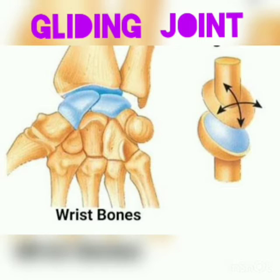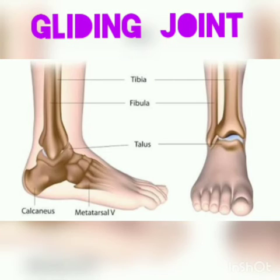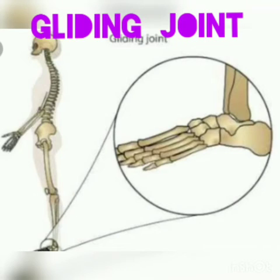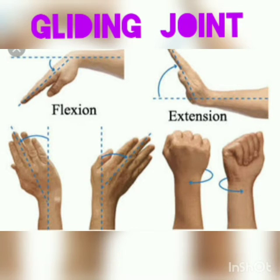Gliding joint. The gliding joint allows movement at the wrist and ankle, and also between any two vertebrae of the spine. It allows our back to bend, twist, and turn at each joint. What would happen if our backbone was made up of just one long bone? It would make us look as stiff as a scarecrow.